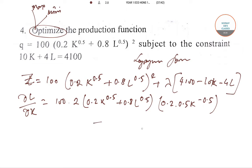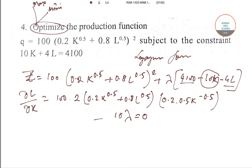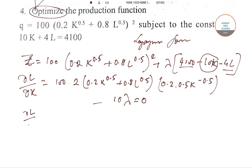In the next part, you forget this and apply the 10 lambda term, setting it equal to zero. Similarly, del z/del L will be 200(0.2K^0.5 + 0.8L^0.5) times 0.8 times 0.5 times L^(-0.5).